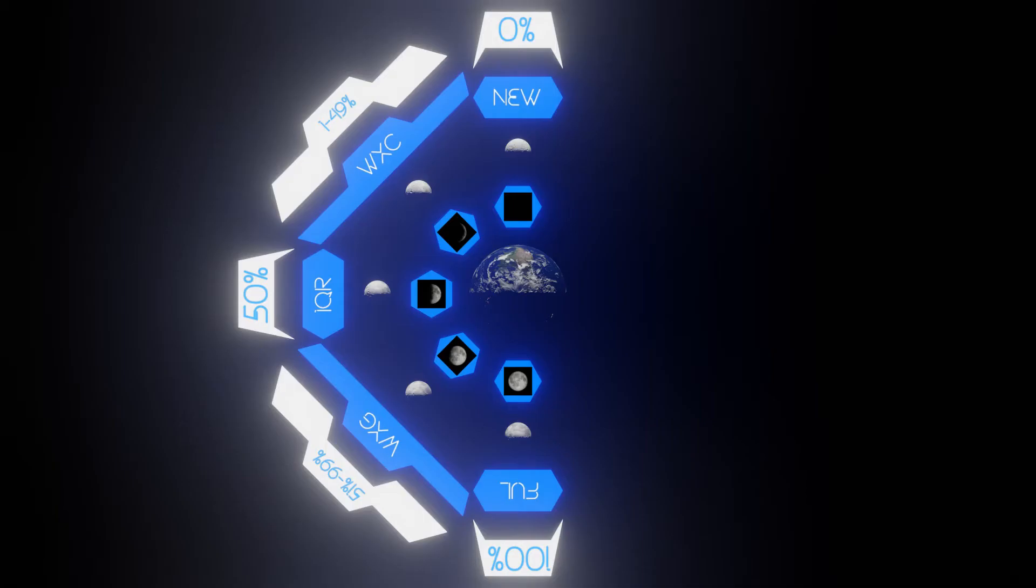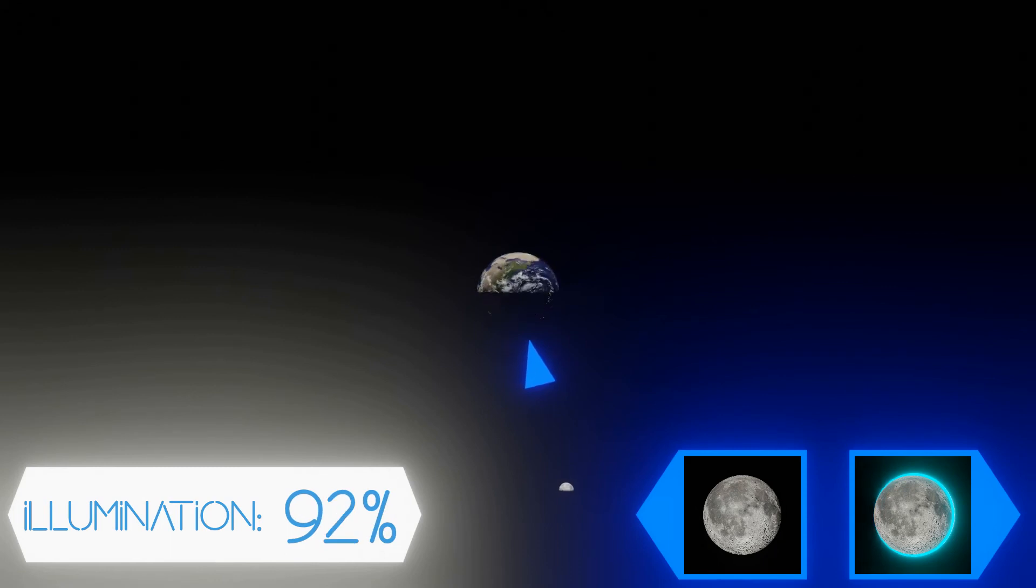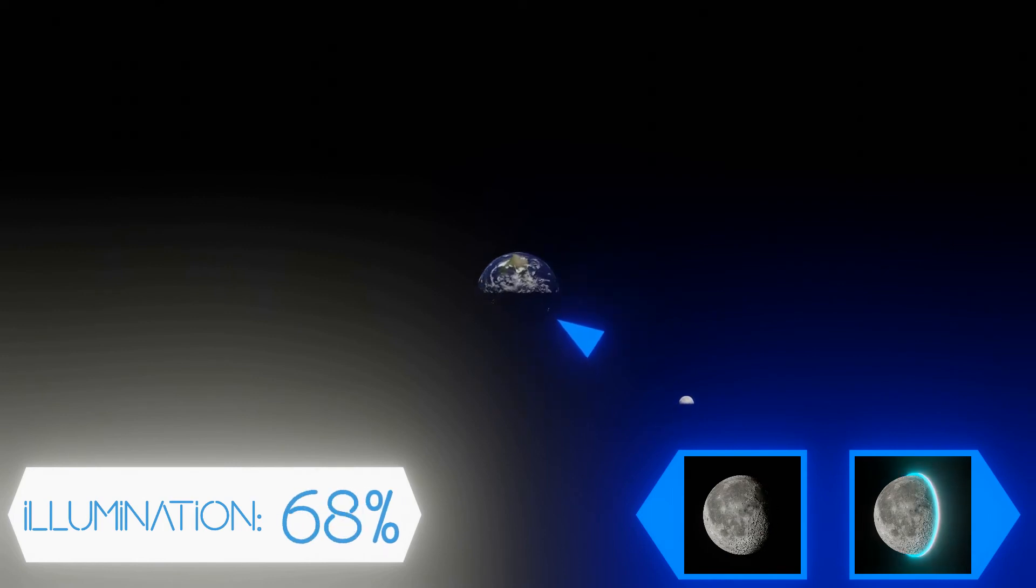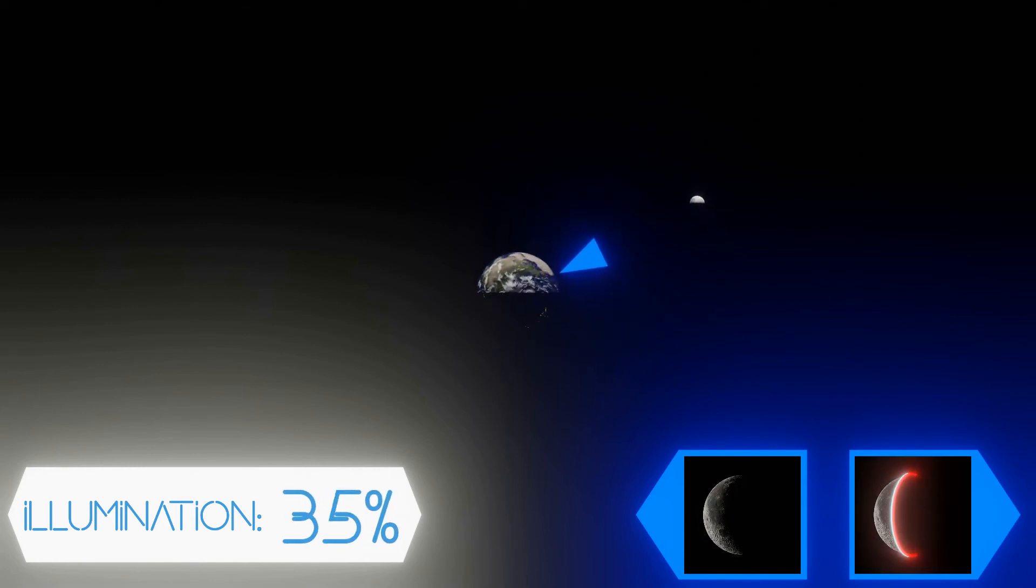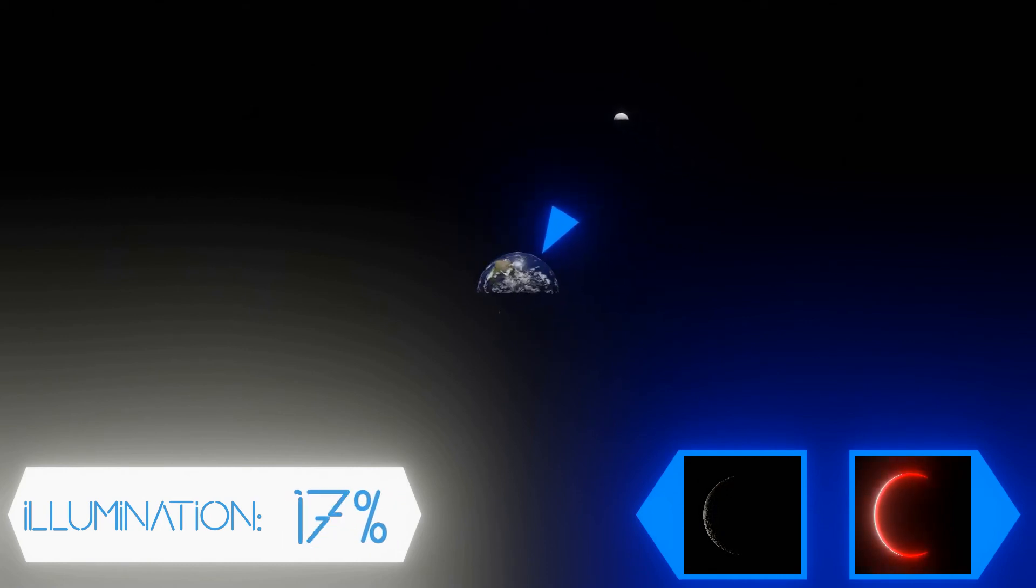We are now halfway done with the lunar cycle. Now, the moon will go through all of its phases, but in reverse. It'll first start to disappear to a waning gibbous. Waning means shrinking, by the way. Then, it'll continue into the third quarter, because the moon is three quarters done with its cycle. After that, we have the second crescent, the waning crescent. And finally, we arrive back to the familiar new moon.